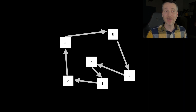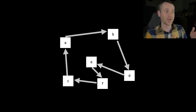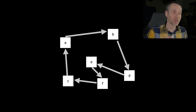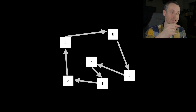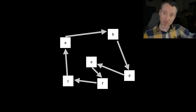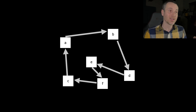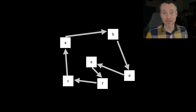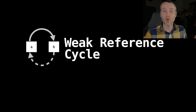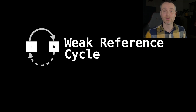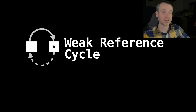If we have many items together, something like A could point to B, which can point to D, which can point to E, then to F, then to C, and then all the way back to A. So we have a cycle in this case, and this is all a strong reference cycle. In order to break these strong reference cycles, we use a weak reference cycle.